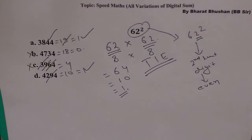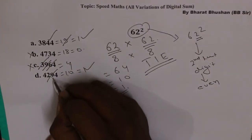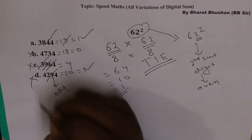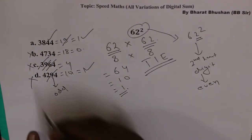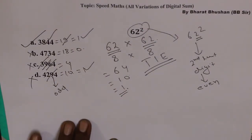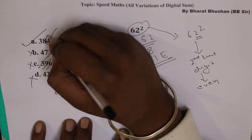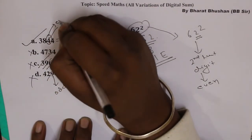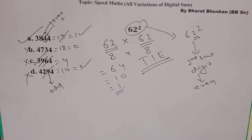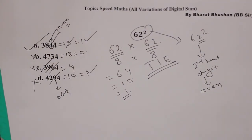So here, 62 ka square nikala hai, meaning the number ends in 2. Therefore its square's second last digit should be even. Option D's second last digit is 9, which is odd, so option D is wrong. Option A's second last digit is even, so the correct answer is A.